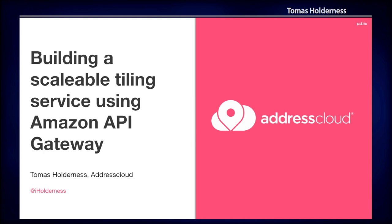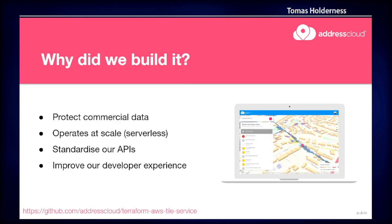We're going to talk about building a very simple tile service using API Gateway. So why did we build it? Address Cloud provides geocoding, property intel, and risk services to insurers. We work with a network of commercial data partners. We need to protect their data and our data — unfortunately it's not open data in this case — and we need to deliver that data to our customers very quickly.